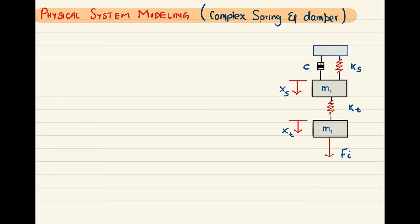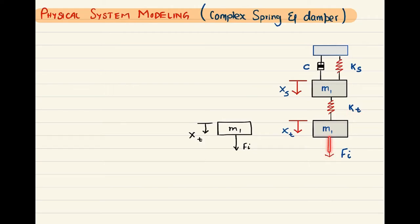For the free body diagram, we start with M1. We draw this mass block named M1, which has an input force Fi going downward and displacement Xt. When the input force Fi goes downward, the spring Kt produces a reactive force pulling M1 upward, which we name FkT, drawn in the upward direction.